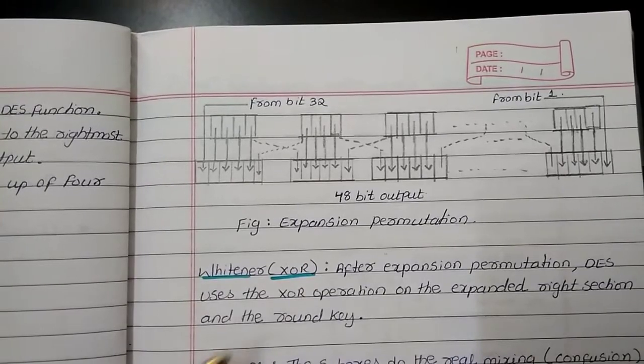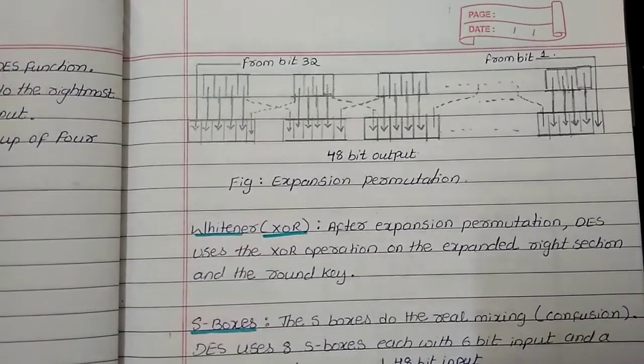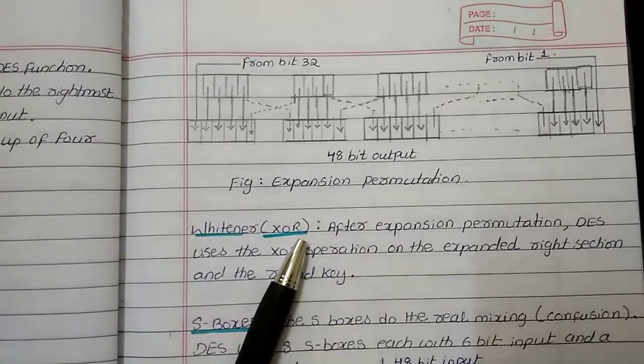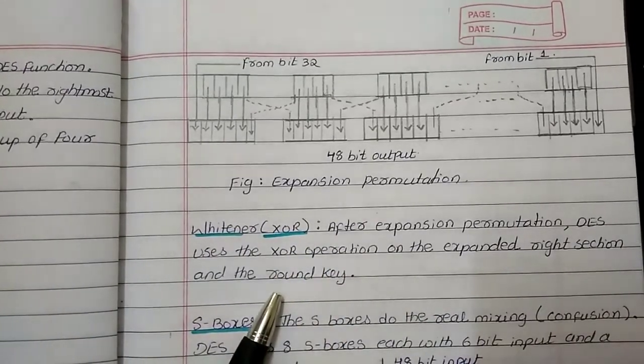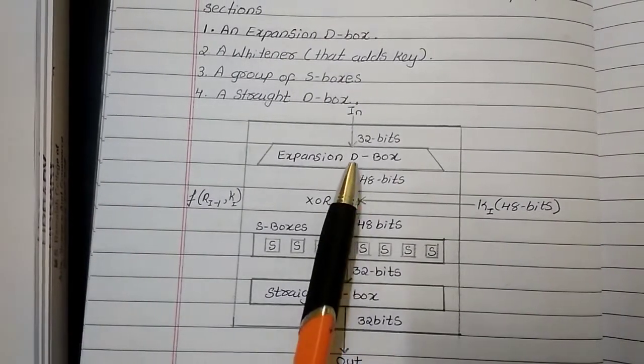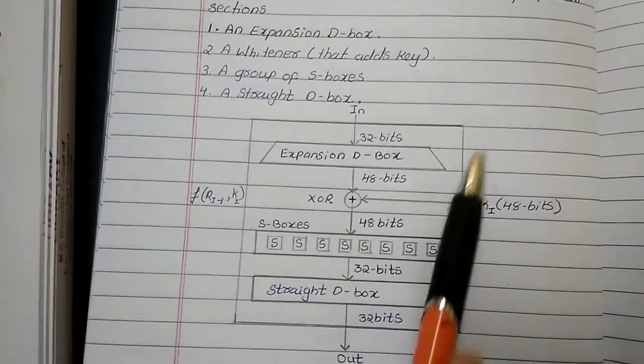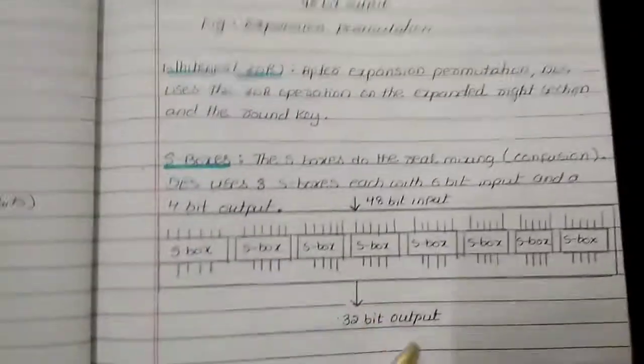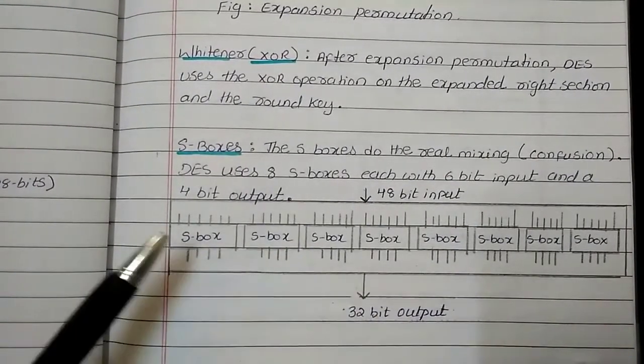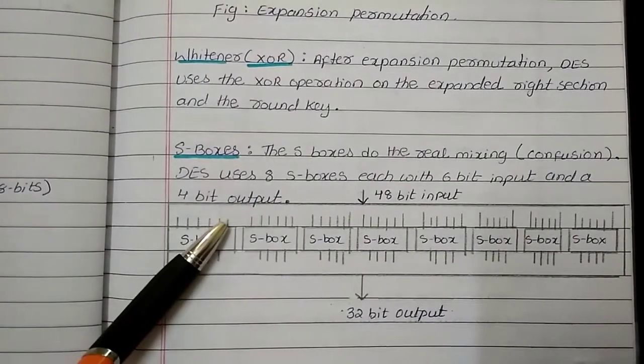As far as the XOR is concerned, XOR is also called as Whitener. Once the expansion permutation is happening, the DES is using this XOR operation on the expanded write section and the round key. That means, I am applying the 48-bit XOR gate on the expanded output and the Ki. Then as far as S-box is concerned, it is a group of S-boxes. As you can see, each S-box is having 6-bit input. 1, 2, 3, 4, 5, 6. Like this, I am having 8 S-boxes.